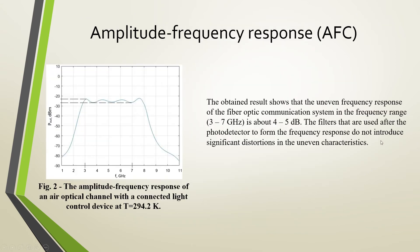Based on the information received, the server sends commands to the lighting control system to increase or decrease the voltage on specific lamps. One of the important parameters characterizing the operation of fiber optic communication systems — which includes an air optical communication channel — is the amplitude frequency response. The obtained result shows that the uneven frequency response of the fiber optic communication system in the frequency range from 3 to 7 GHz is about 4–5 dB. The filters used after the photodetector to form the frequency response do not introduce significant distortion in the uneven characteristic. This allows stable signal transmission with a large amount of information after connecting the light control device developed by us.